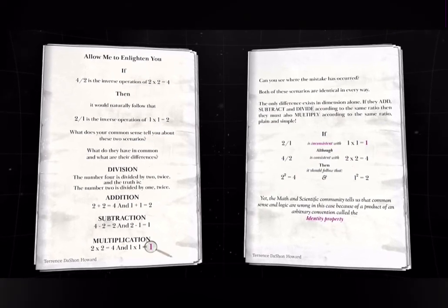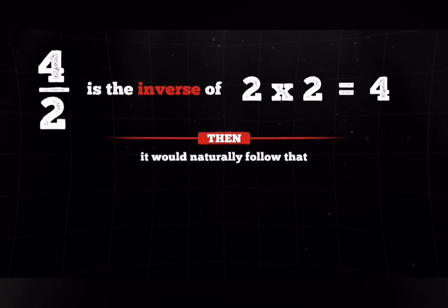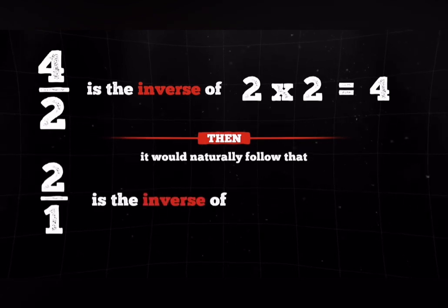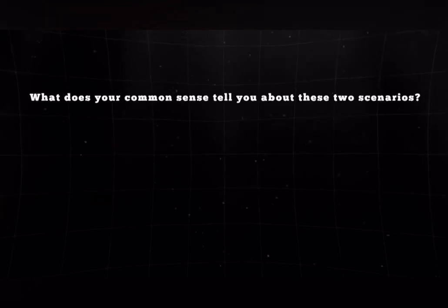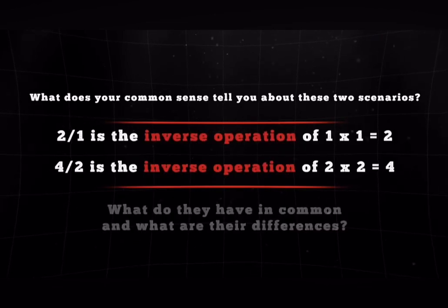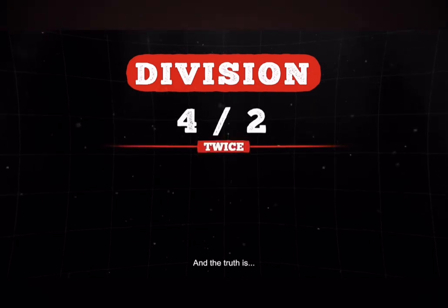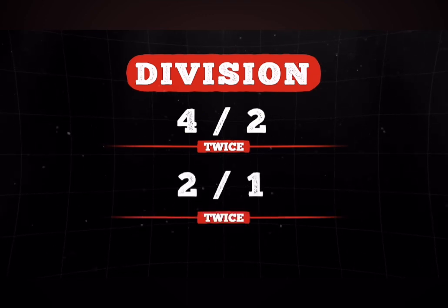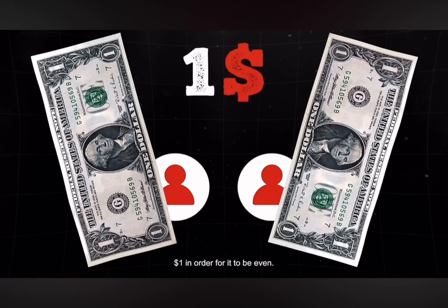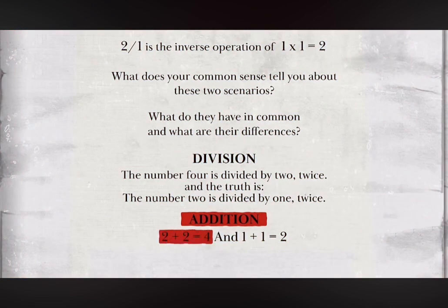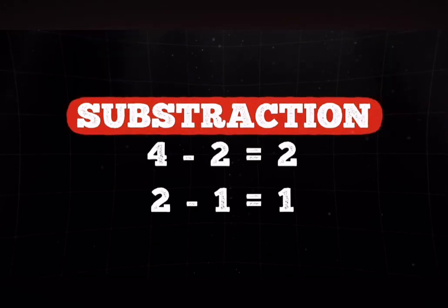Allow me to enlighten you. If 4 over 2 is the inverse operation of 2 times 2 equaling 4, then it naturally follows that 2 divided by 1 is the inverse operation of 1 times 1 equaling 2. What does your common sense tell you about these two scenarios — what do they have in common and what are their differences? The number 4 is divided by 2 twice, and the number 2 is divided by 1 twice. The proof: if you had $2 and split it between two people, you'd give each person $1. In addition: 2 plus 2 equals 4 and 1 plus 1 equals 2. Subtraction: 4 minus 2 equals 2 and 2 minus 1 equals 1.